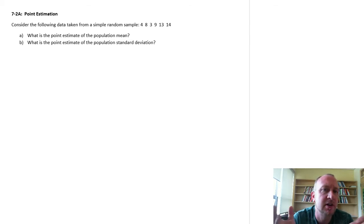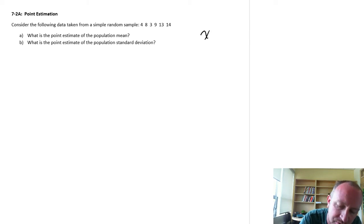So here we're just going to start with a simple random sample. We have a sample of six elements. What is a point estimate of the population mean? So our point estimate here, we denote this by x bar,